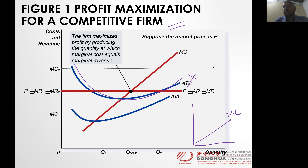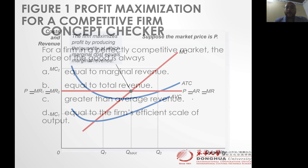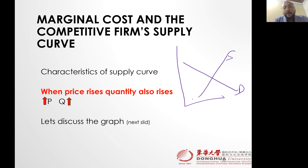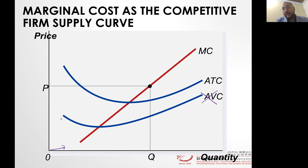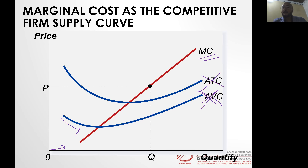Does ATC fulfill the requirement for a supply curve? ATC is a U-shaped curve — no. AR, MR, and P are horizontal, so those also do not fulfill the property of a supply curve. A characteristic of a supply curve is that when price increases, quantity also increases. Every variable cost cannot be the supply curve because when price increases, at short run it is decreasing. So A, B, C cannot be the supply curve because they are U-shaped. Only MC follows the characteristics of a supply curve.